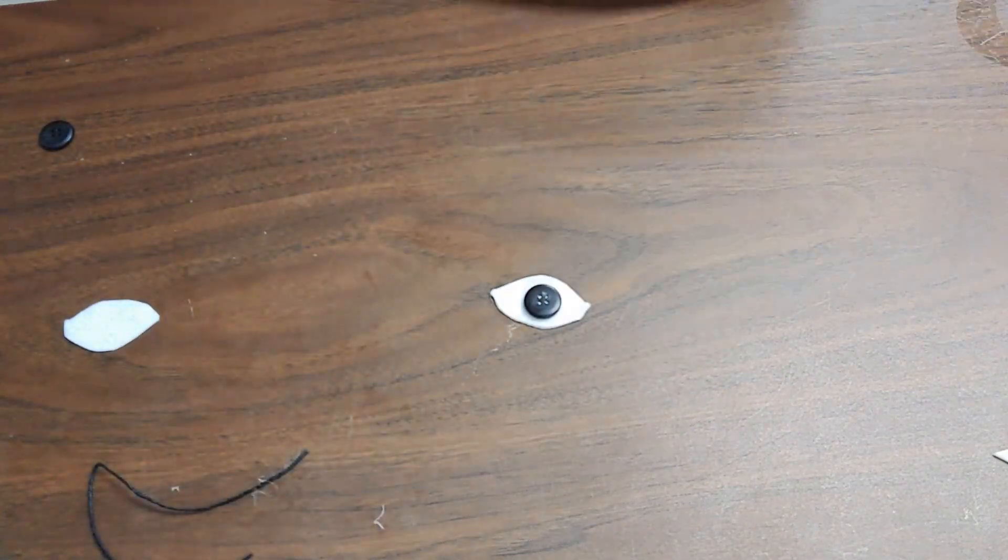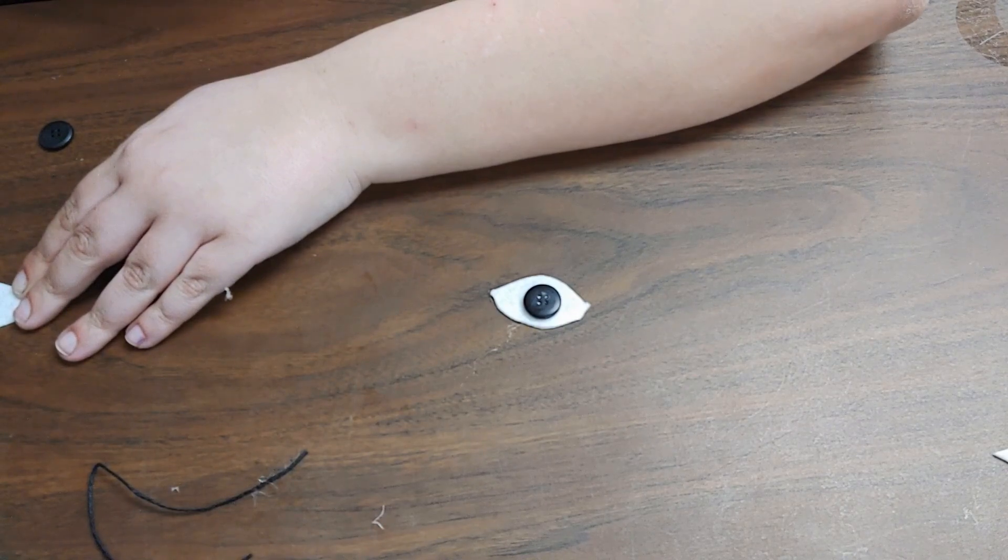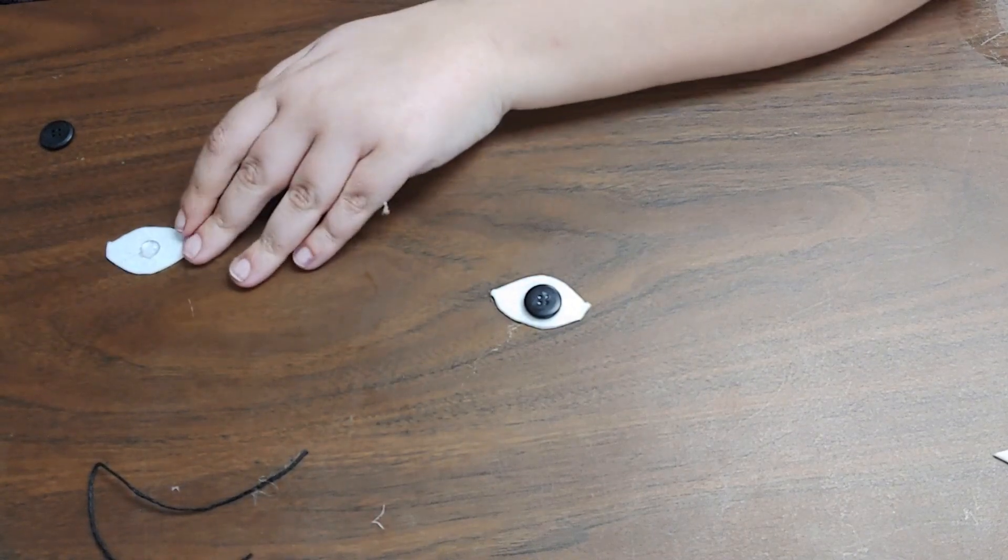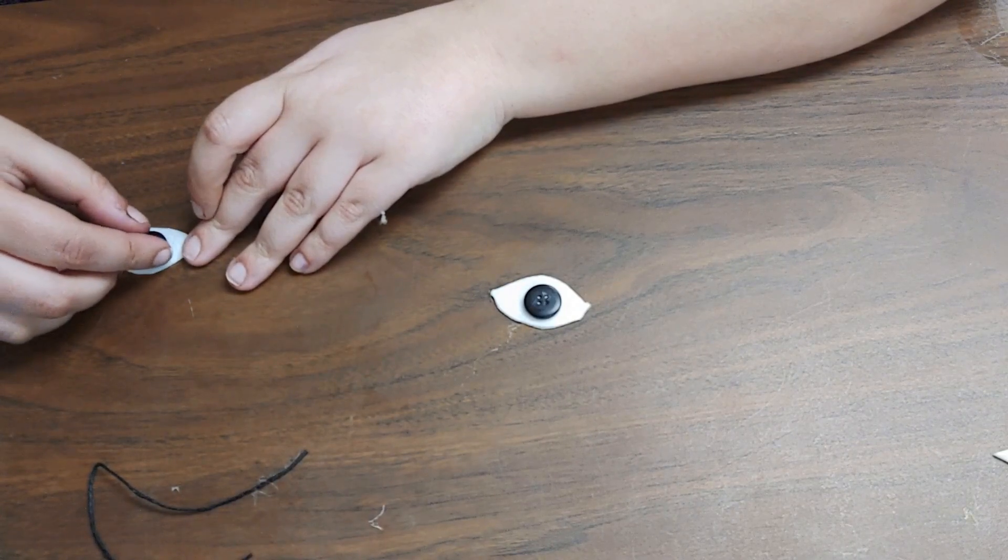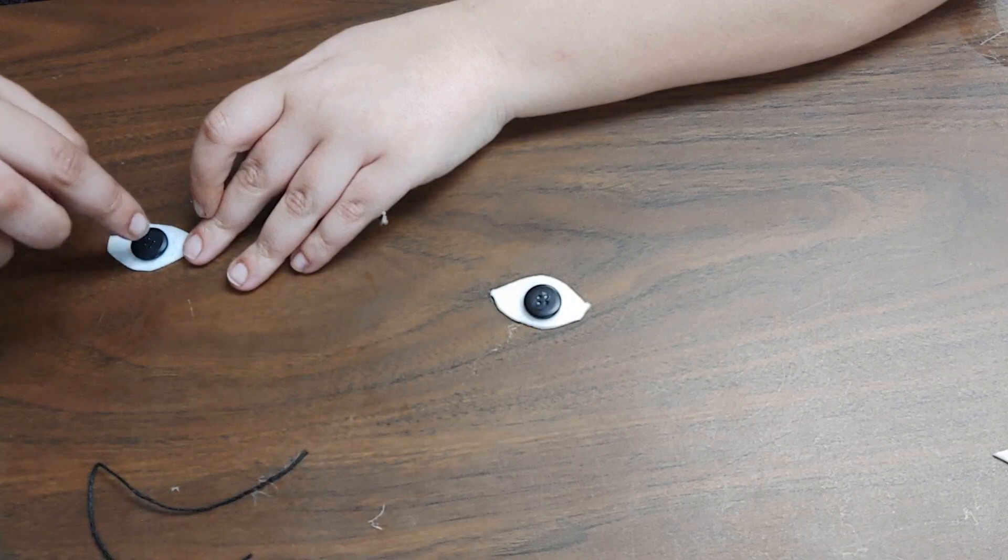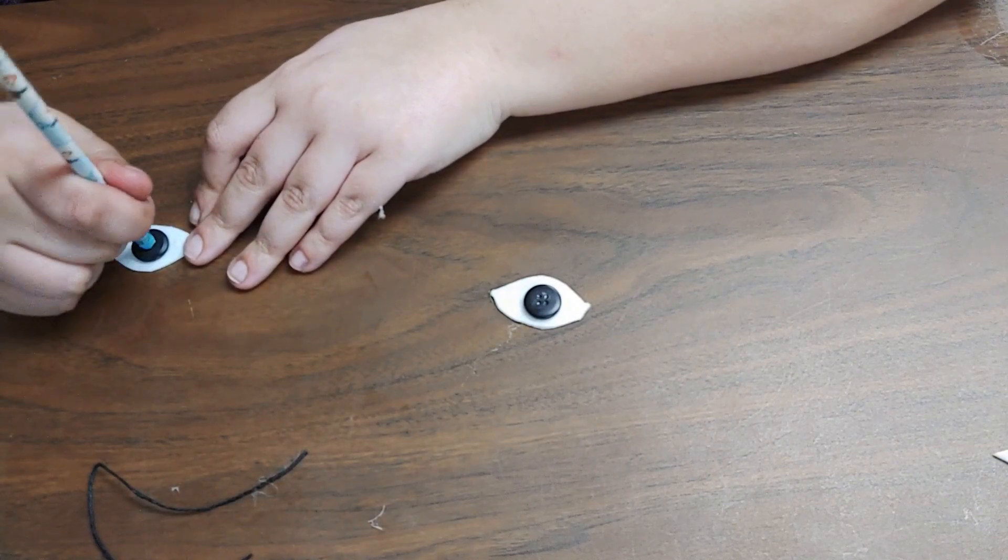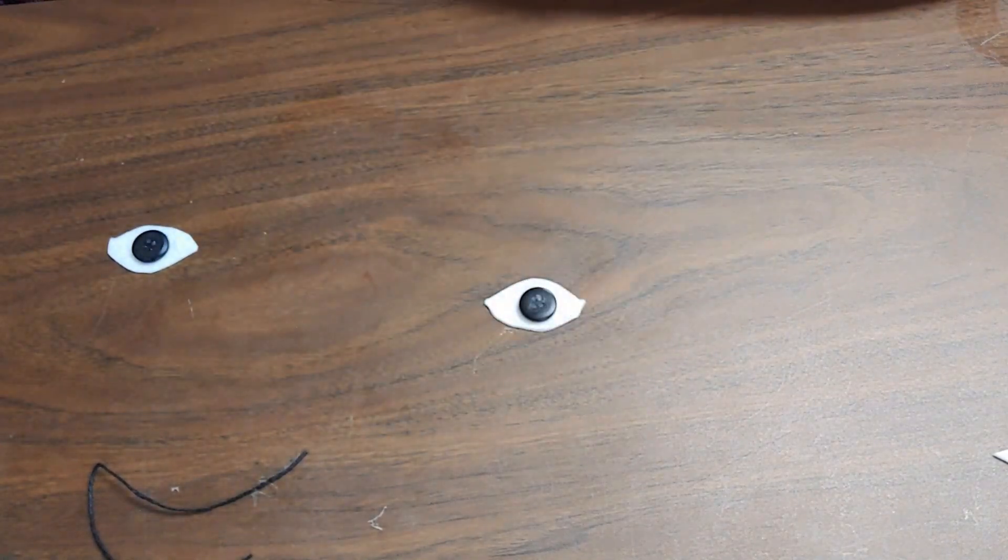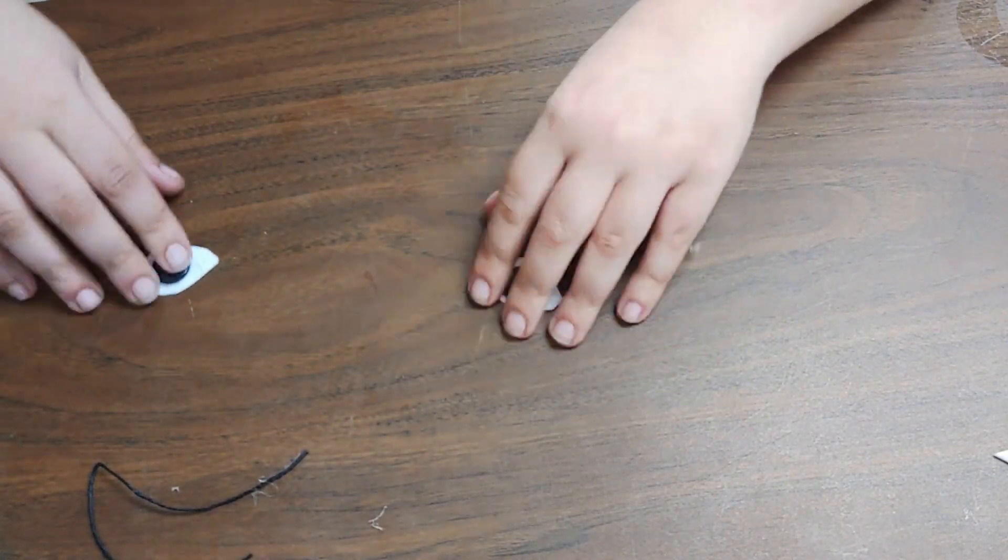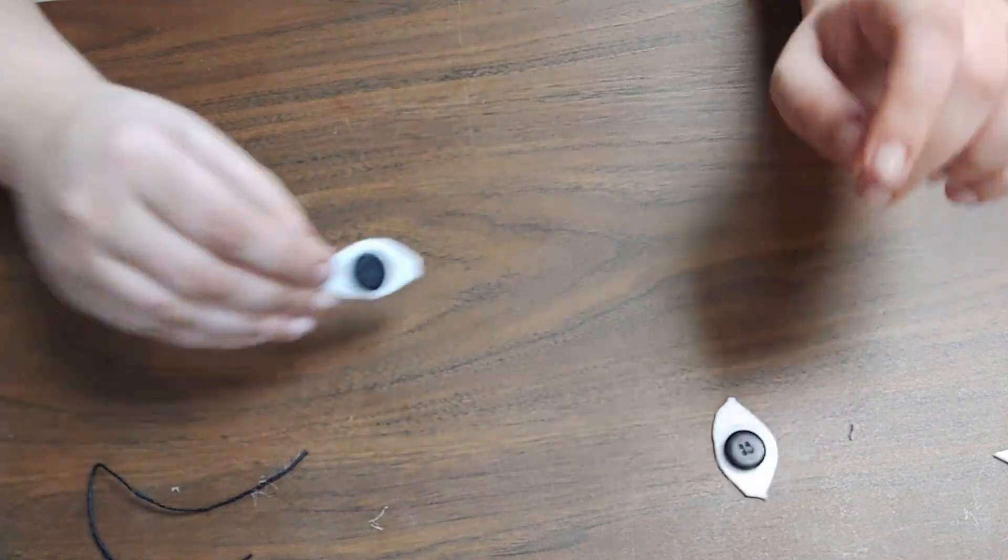Now I'm going to switch and glue the other button. Careful when you're pushing the buttons down because hot glue might come up through the middle. I would actually suggest using something that isn't going to hurt if it touches hot glue, like this pencil. And there we have it—my eyes are ready to be attached.